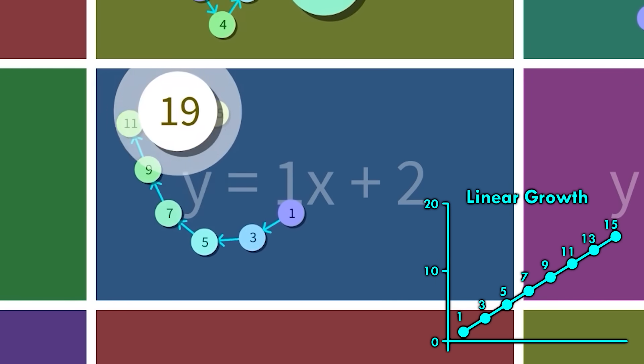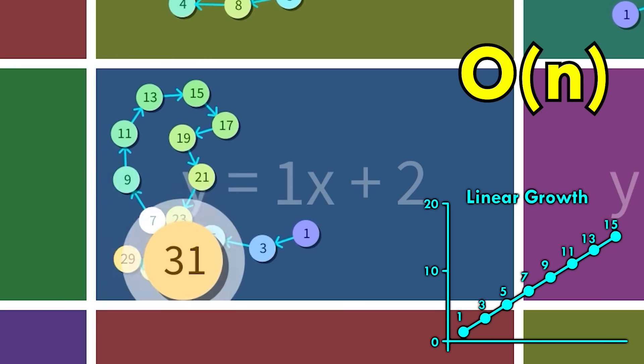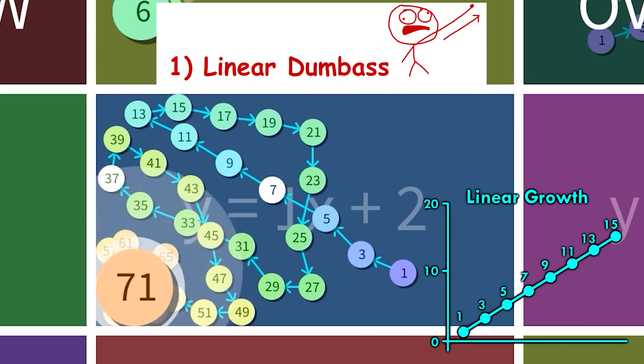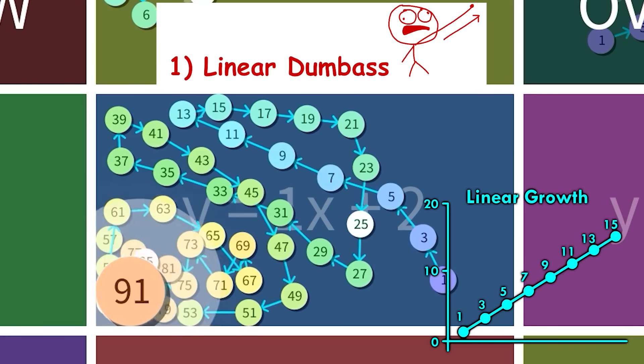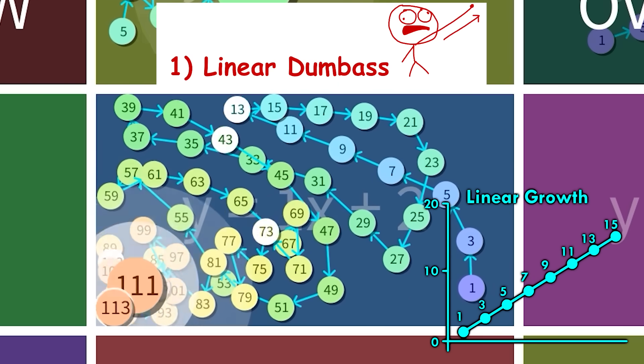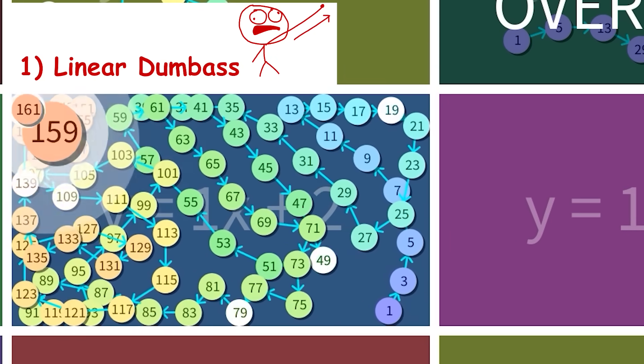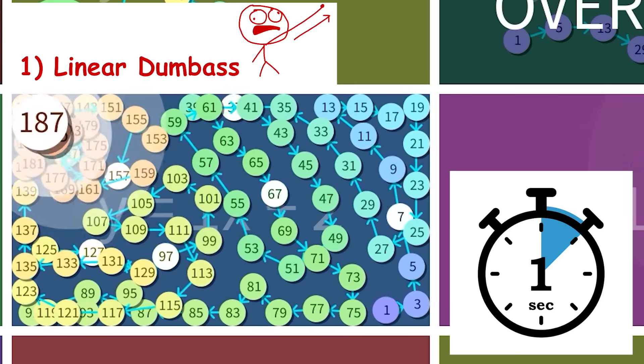Growth is linear, so it takes on the order of O of N, millions of iterations, to reach the integer overflow limit. That's why linear dumbass universes fill to the brim with nodes, but will take days of runtime to actually reach its first error. In this simulation, after each new node is added, it takes about one second for the next node in the path to be added.